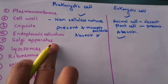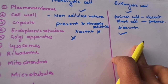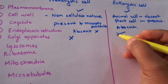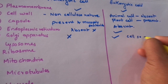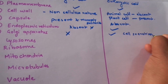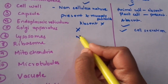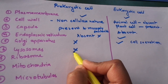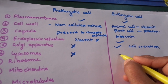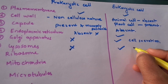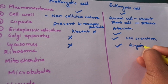The Golgi apparatus is again absent in the case of the prokaryotic cell, but it is present in the eukaryotic cell, and it is associated with cell secretion. Then comes the lysosome — these are absent in the case of the prokaryotic cell and present in the eukaryotic cell, where they are involved in digestion.